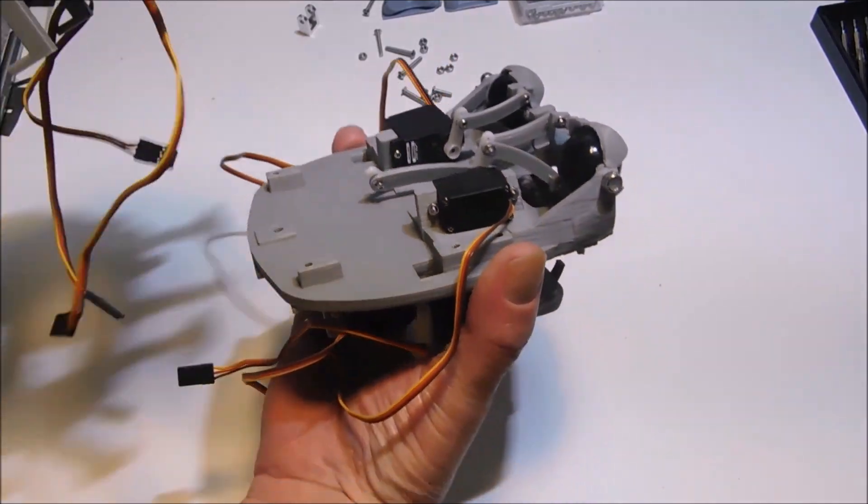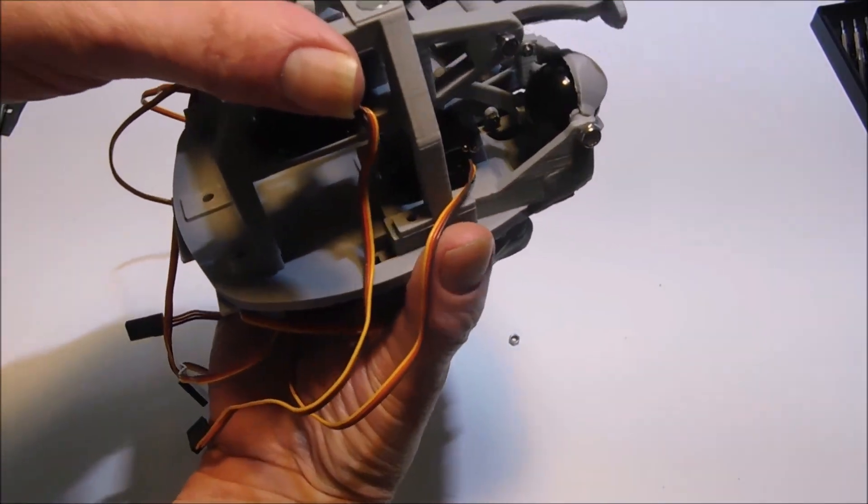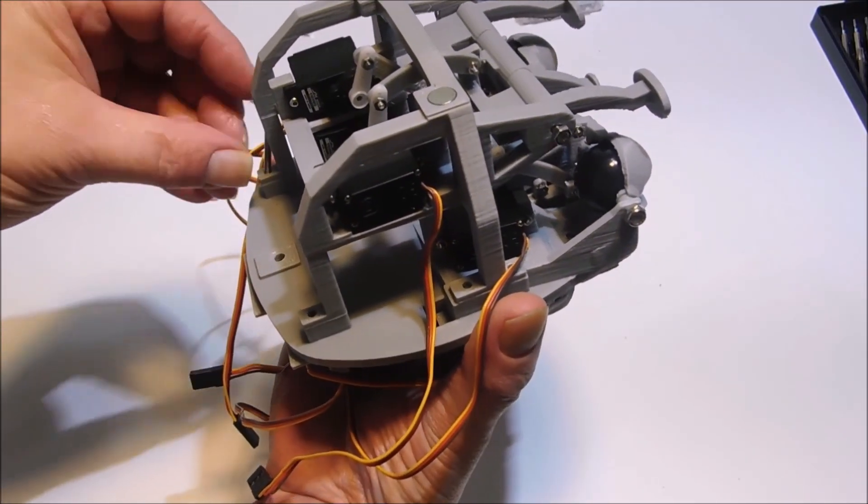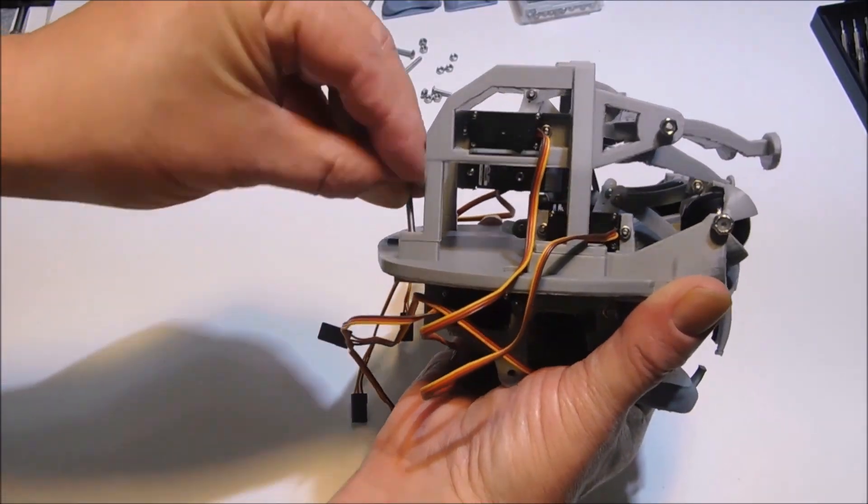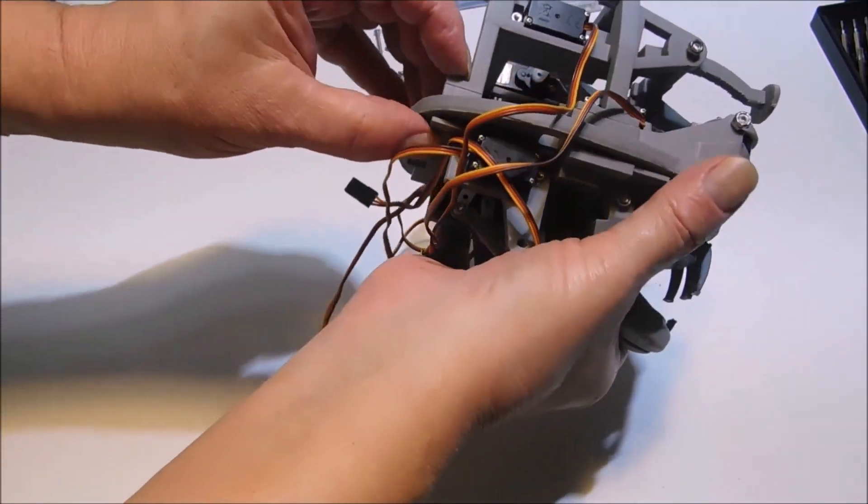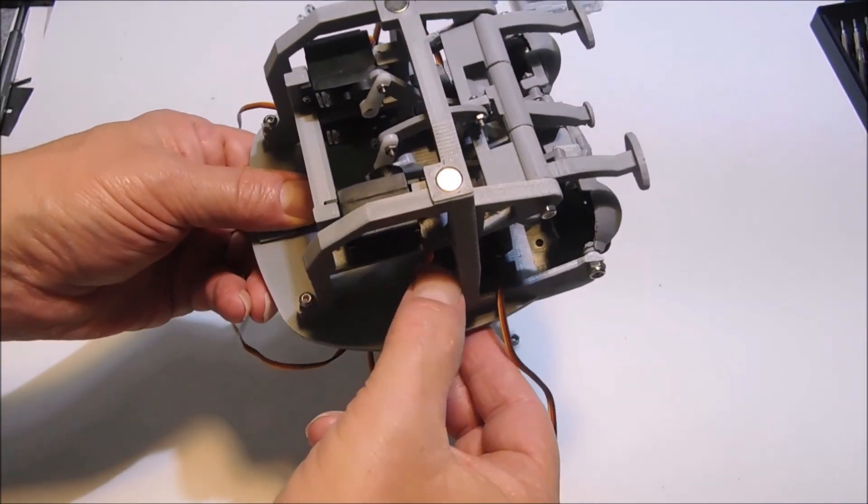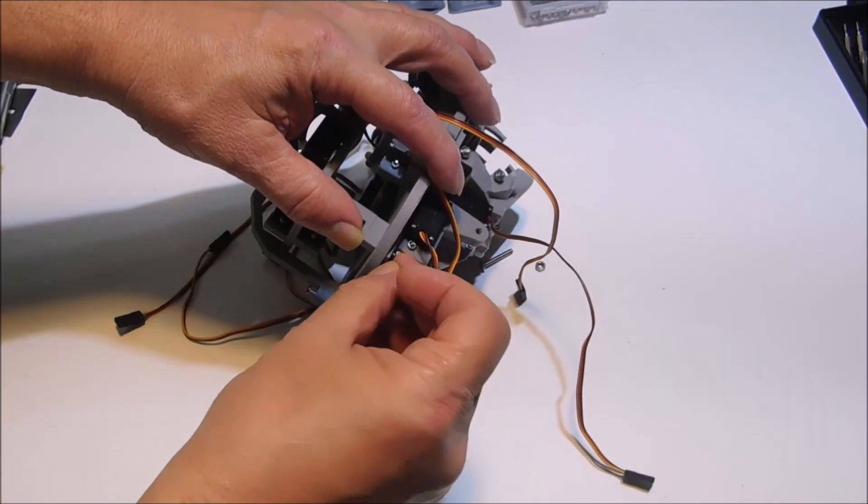Because all this is connected with eight screws, these are three millimeter screws, and you have six that are 20 millimeters long and you have two that are 12 millimeters long. And the short ones are underneath the eyelid area. You know, having eight servos in this animatronic, it's kind of a tight fit.